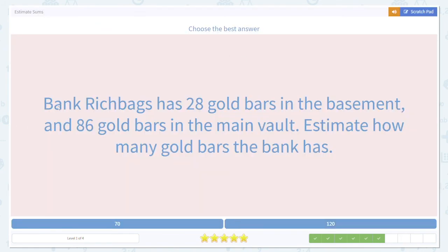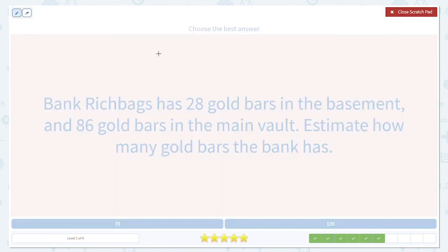Here's another example. Bank rich bags has 28 gold bars in the basement and 86 gold bars in the main vault. Estimate how many gold bars the bank has.